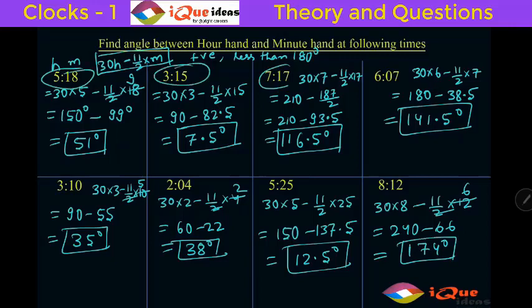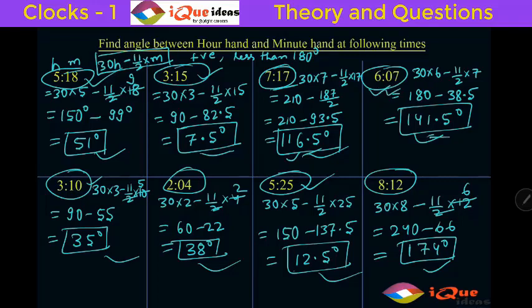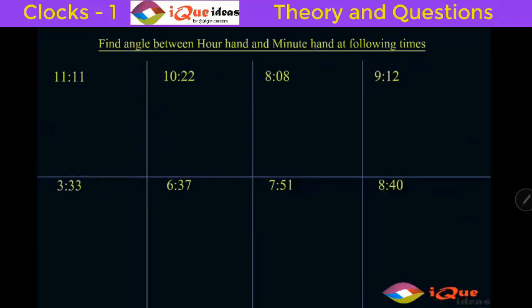You can go back and check: during all of these times, no meeting of the minute hand and hour hand has happened — no crossing has occurred. That's the reason all angles are coming out positive. For example, between 5 and 6 the meeting happens after 5:25, so 5:18 gives a positive angle. Between 3 and 4 the meeting happens after 3:15, so 3:10 is positive. Between 7 and 8 the meeting happens after 7:35, so 7:17 is positive.